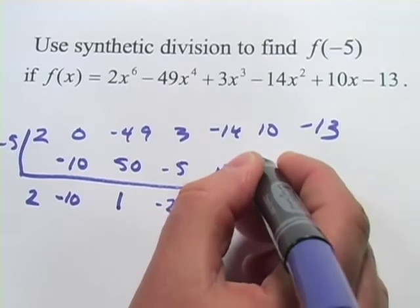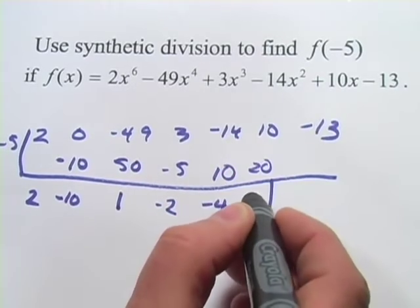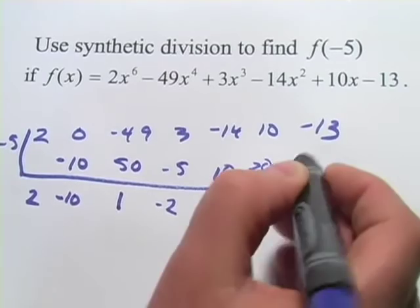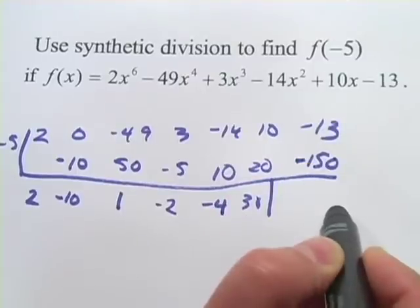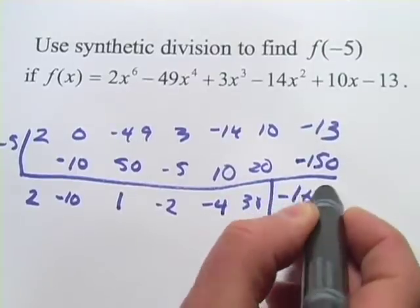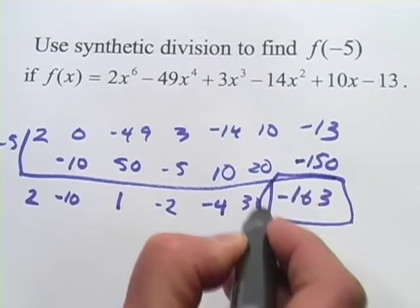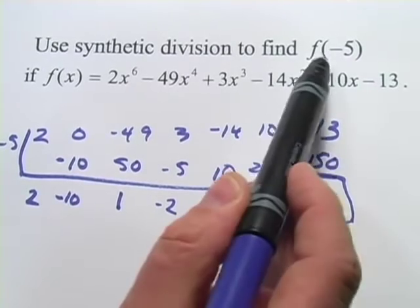Times negative 5 would be a positive 20, which would make this 30. And 30 times negative 5 is a negative 150. And we add that to our negative 13, and we get negative 163. That's our remainder, and that is f of negative 5.